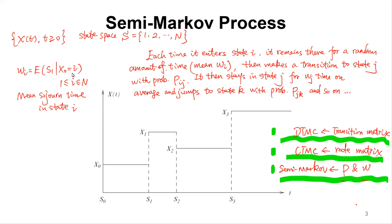The key difference is that the mean sojourn time is a random amount of time — this does not necessarily have to be exponential. It could be a general random distribution, but the mean is wi. So wi is defined as E[sojourn time | x0 = i]. The waiting time depends on the state: if the beginning state is j, you wait wj; if it is i, you wait wi. The mean sojourn time depends on which state you are in.